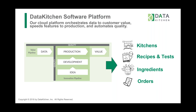Our product has four main conceptual buckets — we use food metaphors, so apologies for that. We've got a kitchen, which is a place to work; recipes and tests, which are ways to orchestrate workflow across all your tools; ingredients, which are reusable components; and orders, which are the metadata resulting from running recipes and test results on top of your tools and data.